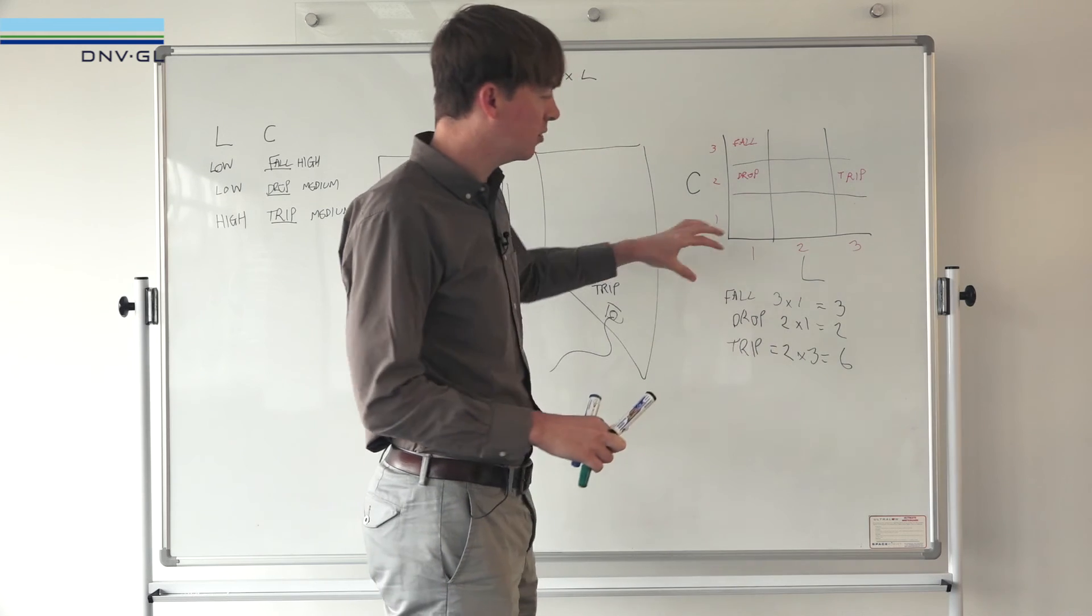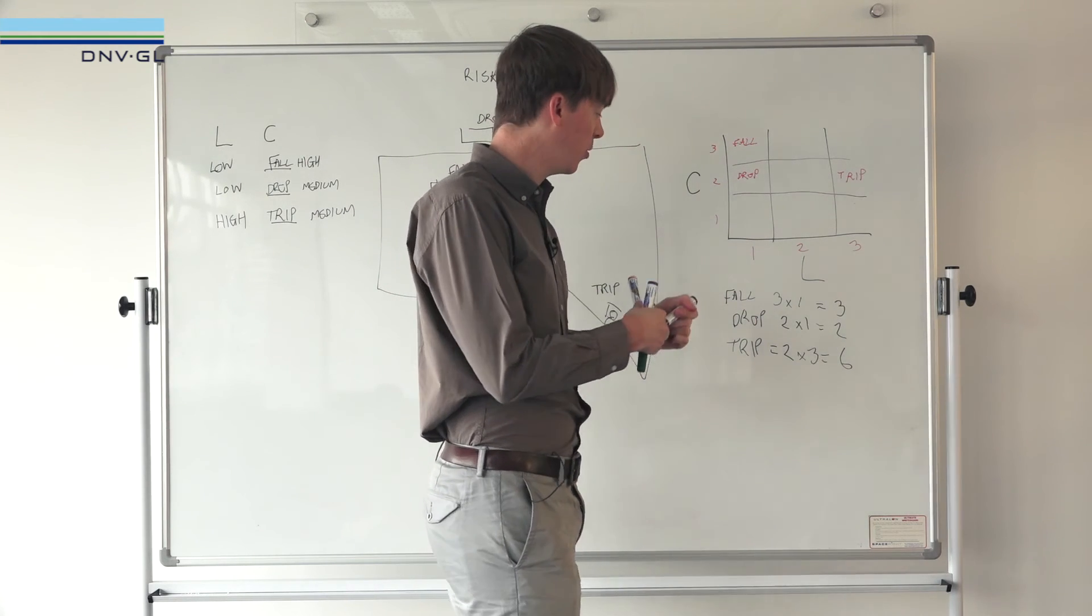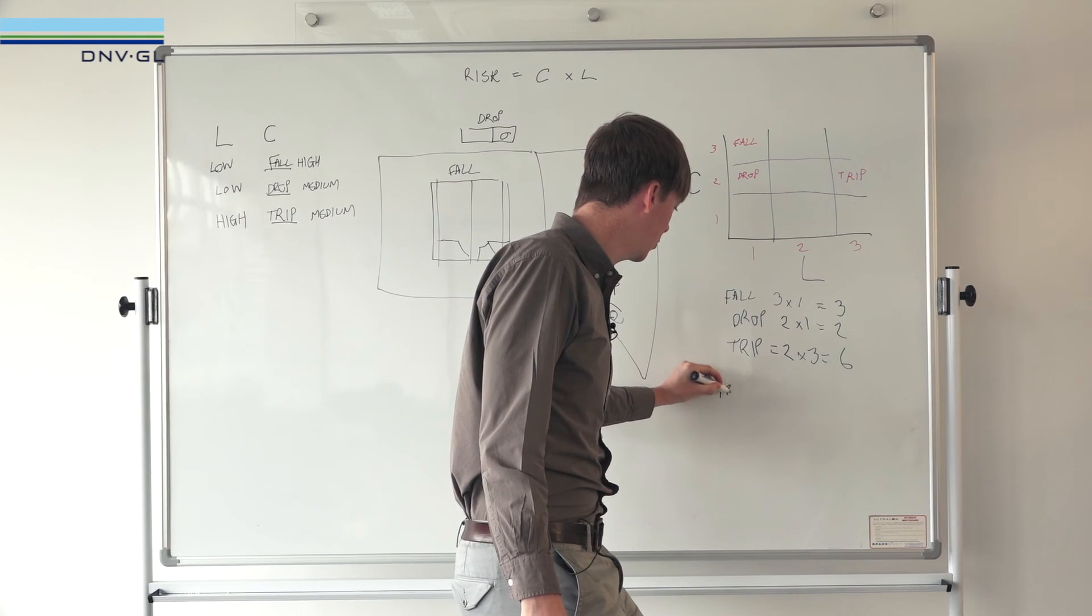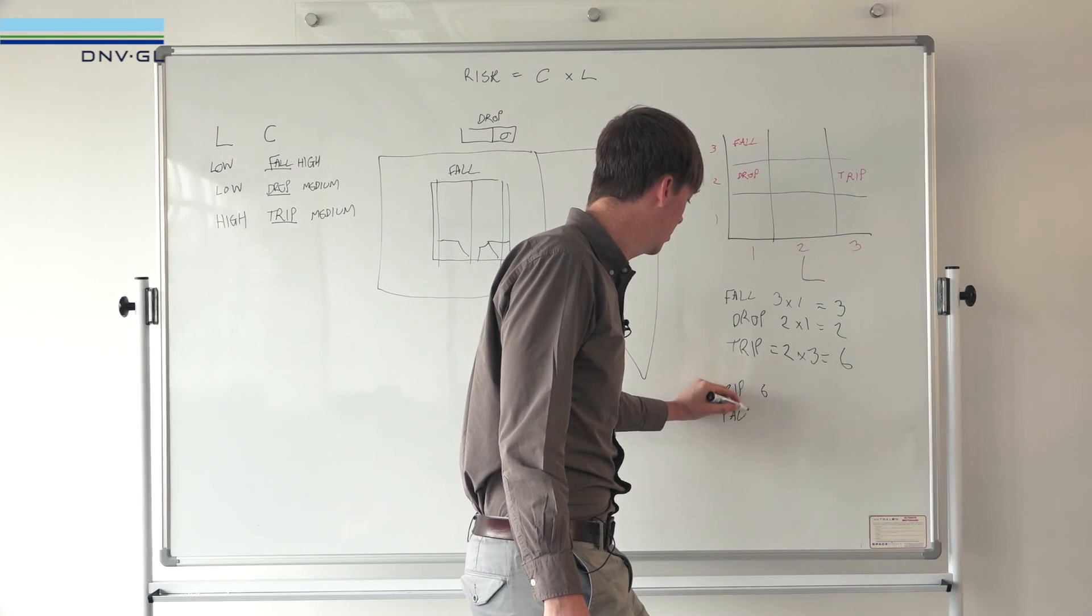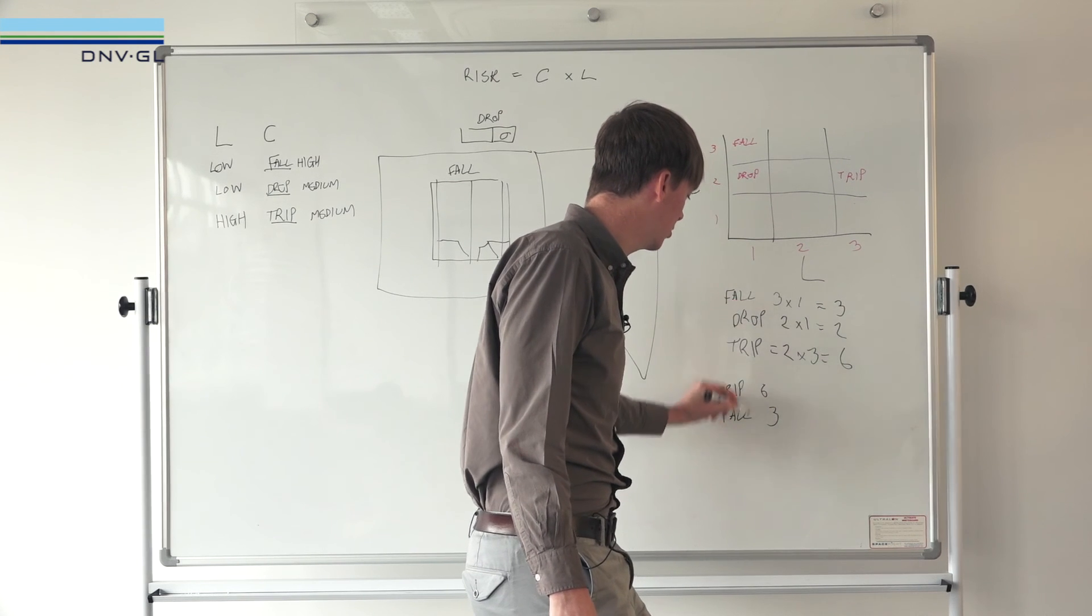But it's got a frequency of 3, a likelihood of 3, so it's got a risk level of 6. All of a sudden now you can see that there's a different order in how important these things are.